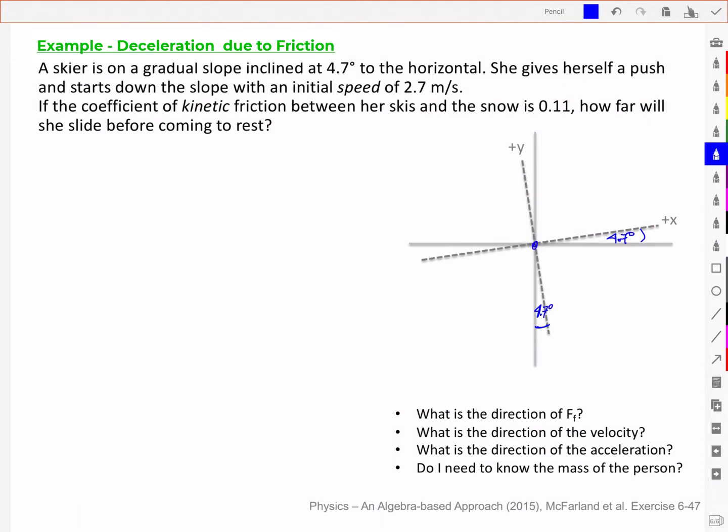I've got the force of gravity acting straight down. I've got a y component here, Fgy. It's in the negative direction, and it's related to the cos of theta. And then I've got an x component of my gravity.